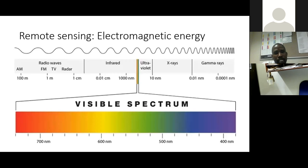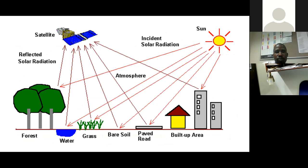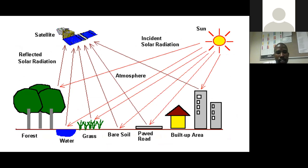The electromagnetic energy is composed of radio waves, which are the longest waves. We have the infrared, we have the visible spectrum, we have the ultraviolet, we have the X-rays and the gamma. Most of the electromagnetic energy that we use is from the sun. As the sun propagates its energy to the surface of the earth, it is directed by different phenomena, some of them being the atmosphere.